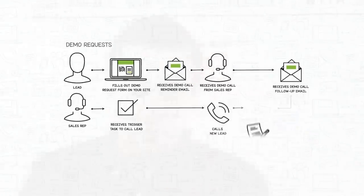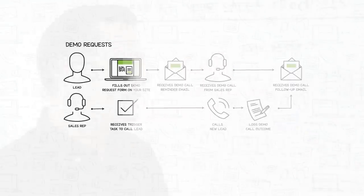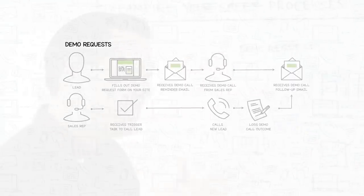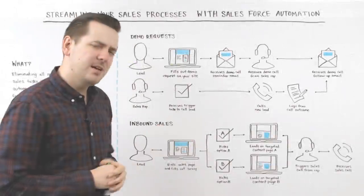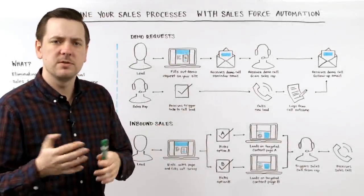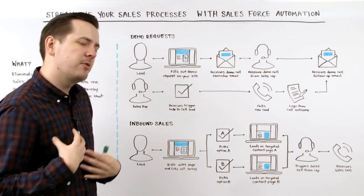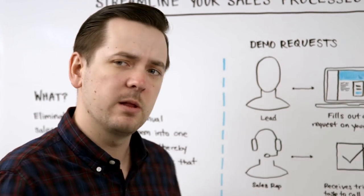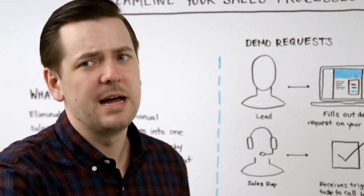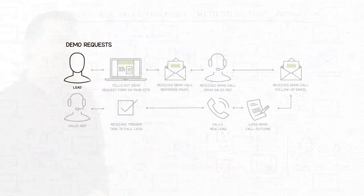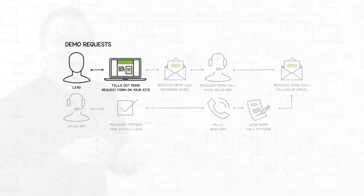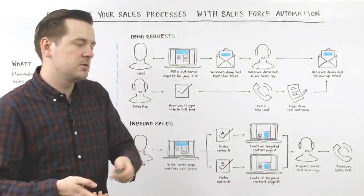So what does this look like in the real world? For a lot of companies, the sales process starts from some sort of a demonstration or a free consultation call if you're in the service business. Or if you're like Ontraport, we do demos for most of our clients before they buy the software to show them what it can do. So a lead would come to your website and fill out a demo request form or a free consultation form requesting contact from you about your product or service.